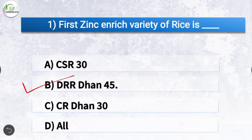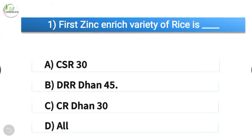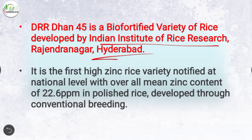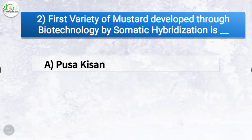Question number one: First zinc enriched variety of rice. The correct answer is option B, DRR Dhan 45. DRR Dhan 45 is a bio-fortified variety of rice developed by Indian Institute of Rice Research, Rajendra Nagar, Hyderabad. It is the first high zinc rice variety notified at national level with overall mean zinc content of 22.6 ppm in polished rice, developed through conventional breeding.